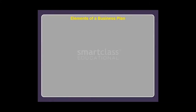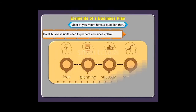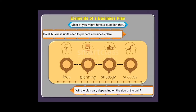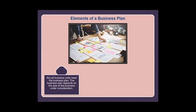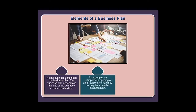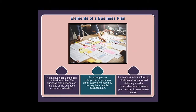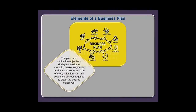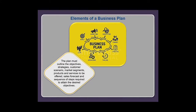Not all business units need to prepare a business plan — the plan varies depending on the size of the unit. For example, an entrepreneur opening a small stationery shop may not require a detailed business plan, however a manufacturer of electronic devices would definitely need a comprehensive business plan to enter a new market. The plan must outline the objectives, strategies, customer scenario, market segments, products and services to be offered, sales forecast, and sequence of steps required to attain the desired objectives.